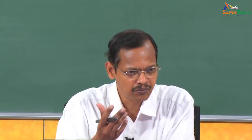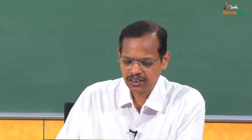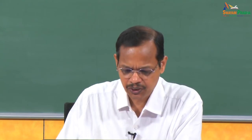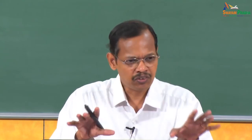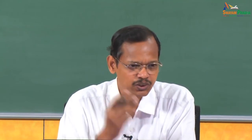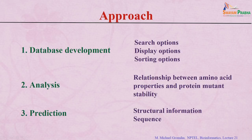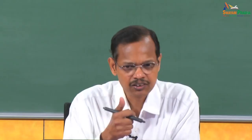In an earlier class we discussed database development — what the various features are and how to analyze data from a database. For thermodynamic data for proteins and mutants, we collect all the data, put it in a computable form, and provide several search options since each user has different interests. Search options, result display, and data download are all important features. It is important to develop a database for both mutants and proteins.